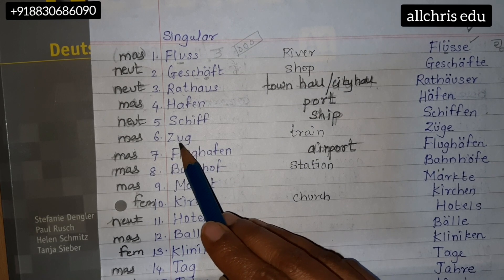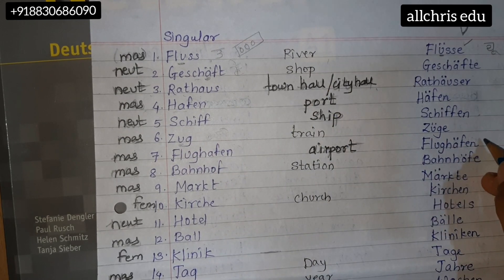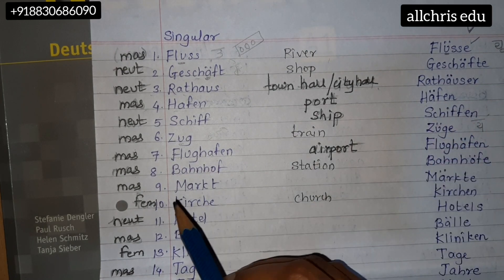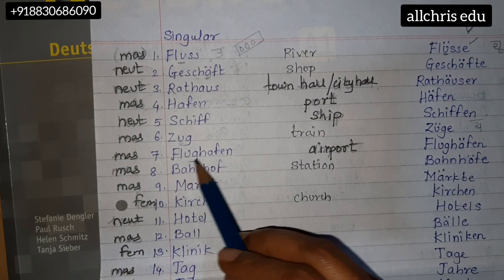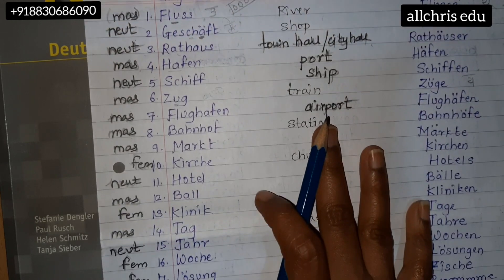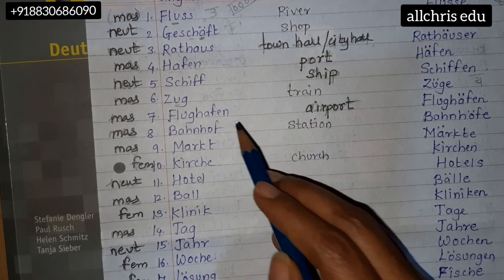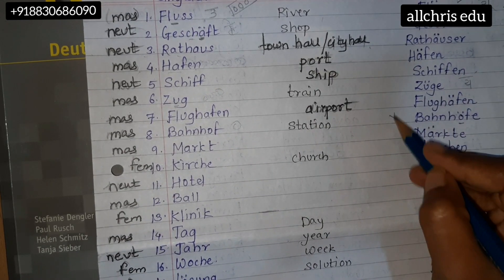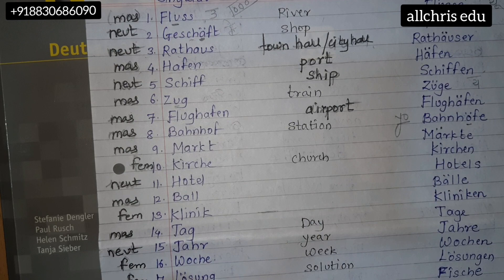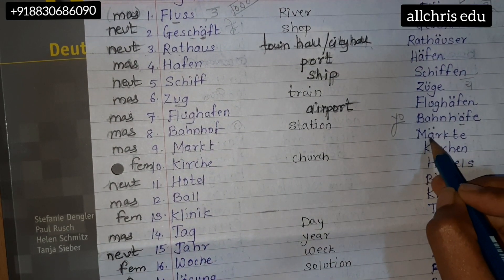Zug — 'oo' sound here, and 'you' sound at the end. Zug. Flughafen, Flughäfen. Bahnhof — 'o' sound here, and 'yo' sound in the plural. Bahnhof. Markt, Märkte.